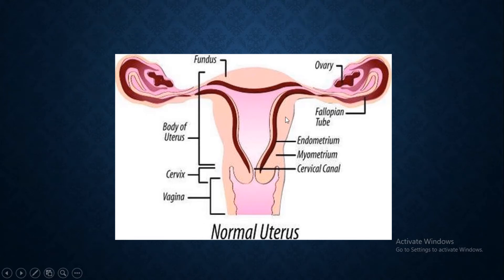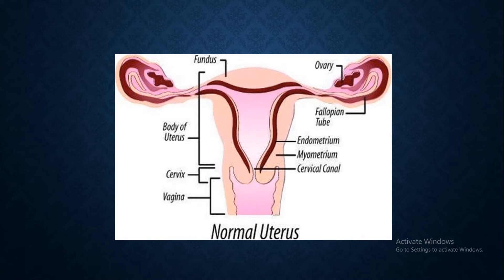Then comes the middle layer in the endometrial wall, which is known as the myometrium, and this is the layer having the muscles. And the outermost layer of the endometrium, which forms the third layer in the endometrial lining, and this is what we call it the perimetrium or the serous layer. So, these are the three layers forming the endometrial wall.